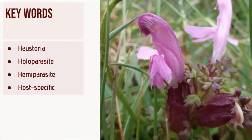Hemiparasitic plants derive some of their nutrients from the host by hooking into the host root system or vascular system, but if no host plant is available they can photosynthesize to some degree and survive without this supplementary nutrition. Most if not all parasitic plants have a very specific host requirement and will only grow in the presence of a particular host — for example, thyme broomrape grows only on thyme plants.